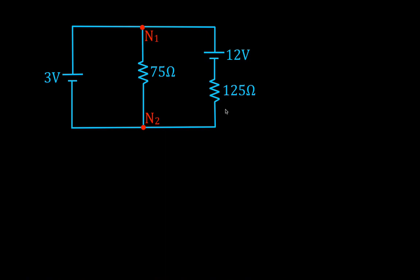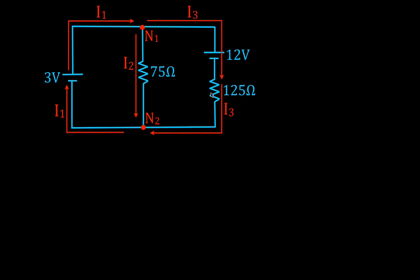Step two is to identify the current and the direction of the current in each of the three branches. We'll say that I1 flows in the clockwise direction through this branch. I2 flows from N1 to N2, and I3 also flows clockwise around that branch. The direction of the currents chosen for each branch is completely arbitrary — it doesn't matter what direction you choose. When we calculate the currents, if we get a positive answer, we chose the correct direction. If we get a negative answer, the current is actually flowing in the other direction. You'll see that in this video.